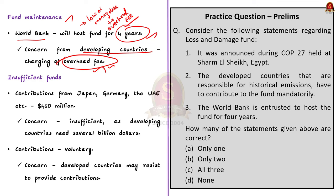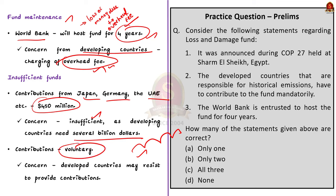The third issue is the insufficiency of funds. Countries like Japan, Germany, and the UAE contributed $450 million, but this amount is insignificant because developing countries are demanding several billion dollars to meet extreme climatic events. Apart from this, there is no clear idea whether developed countries will periodically replenish the amount. Additionally, contributions are totally voluntary — it is not mandatory for developed countries to contribute — so some developed countries will avoid contribution using this loophole.